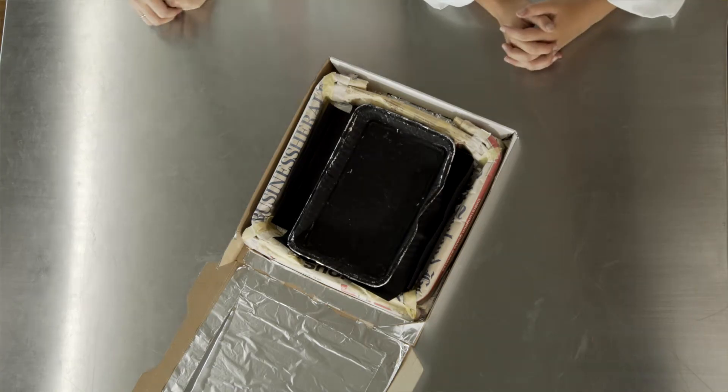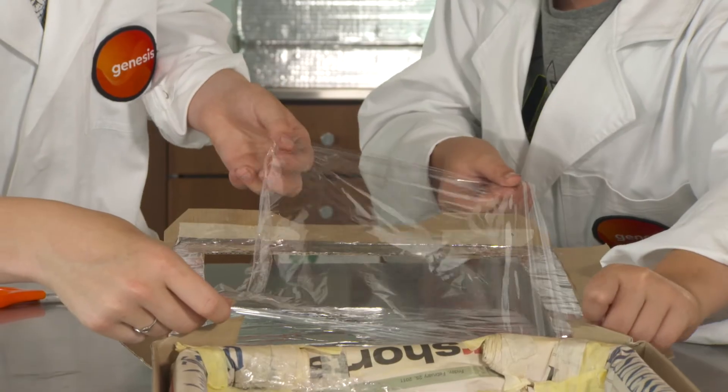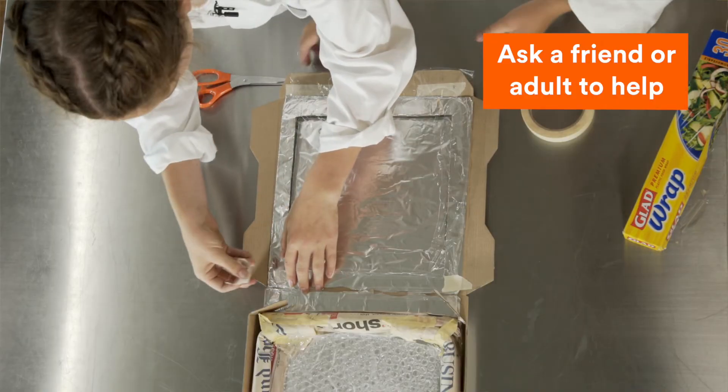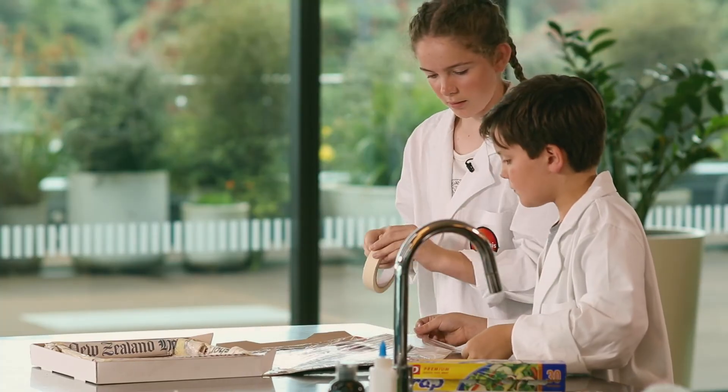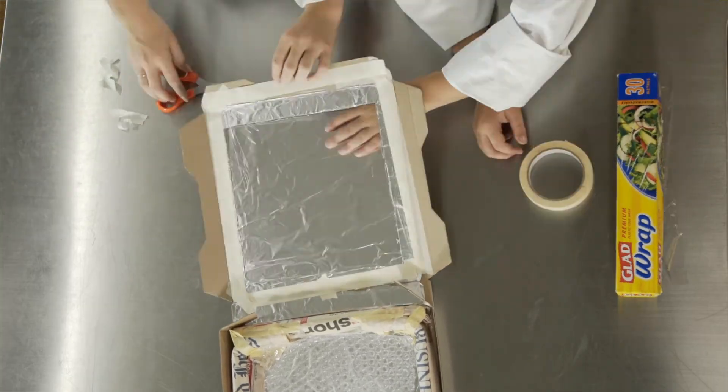Now, you're going to double-glaze the window. On the inside of the box, cover the window you made earlier with glad wrap. Stretch it tight and smooth to fix it in place. Use a little bit of tape at each corner. This helps to hold it in place. Seal all the edges of the window with tape. Close the box.